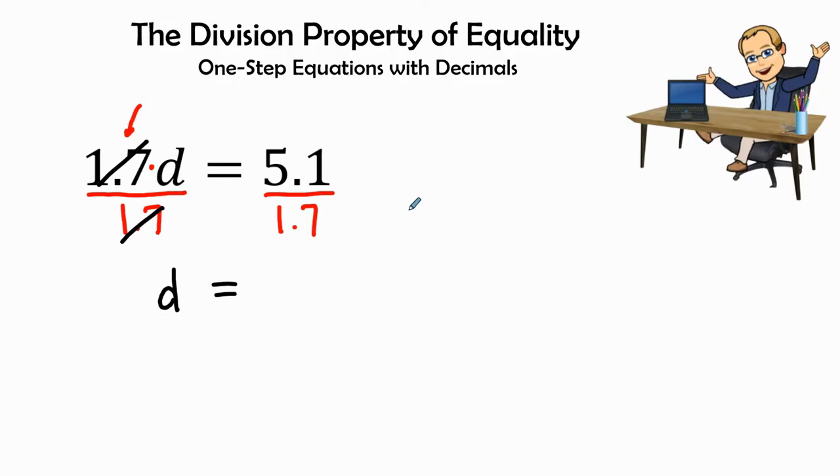So I can look at 1.7. It's going to go into 5.1. If I move this decimal over once, I'm going to move it over once as well. Now I have 17 goes into 51.